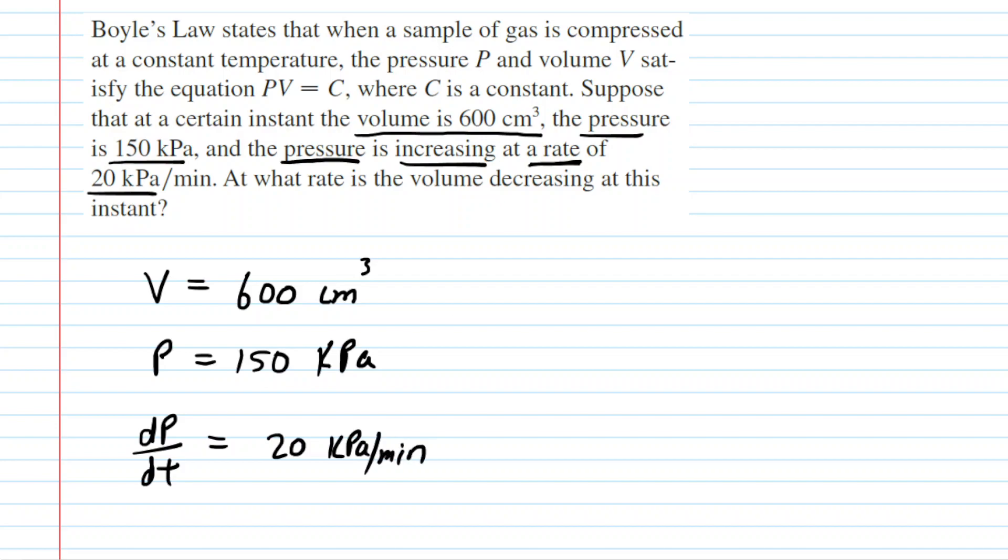So this is the known information. What is unknown is the rate at which the volume is decreasing. So symbolically we're going to be looking for dv dt.